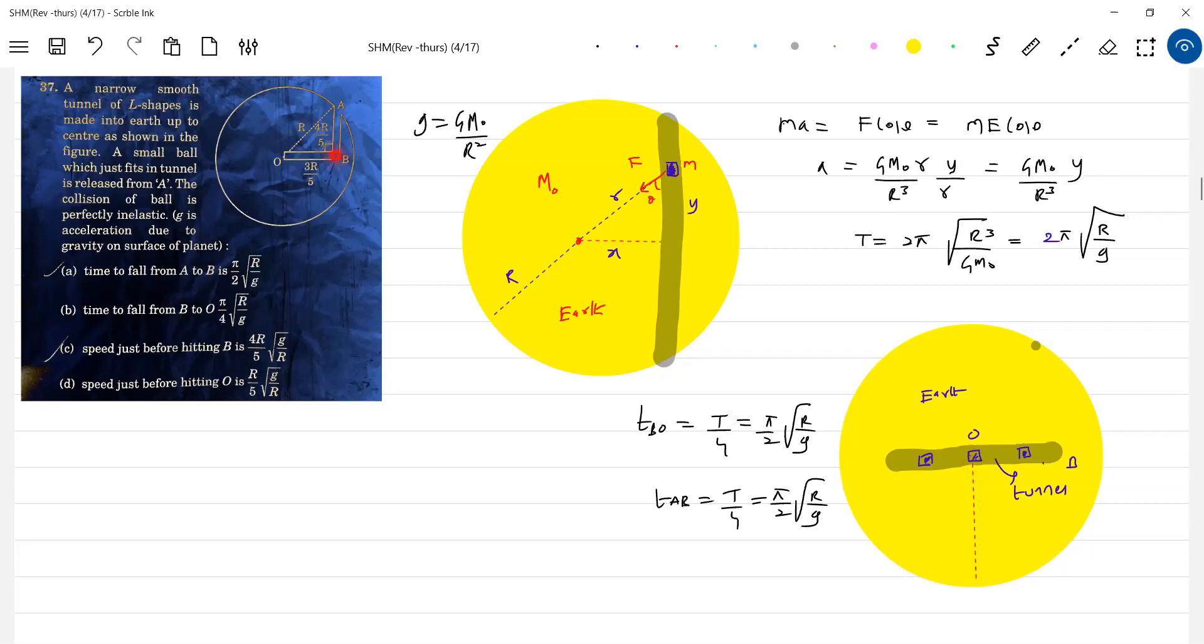Since it is asking time taken to move from B2, so it will be this one. Time to fall from A to B should be equal to pi by two. And time taken to move from B to O is also pi by two. This is ruled out and this will pick up. Then afterwards, speed just before hitting B. With what speed it will come and strike? How to... A omega.